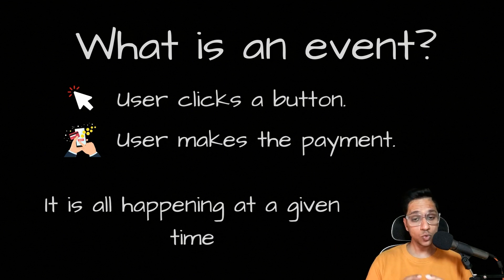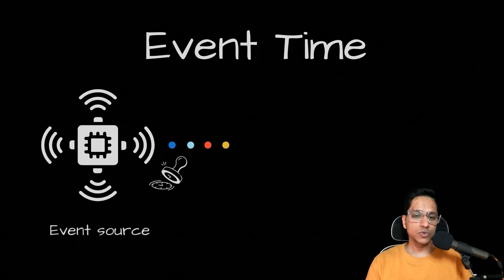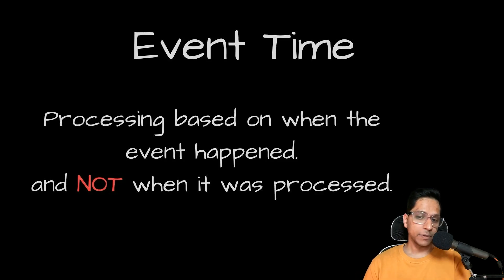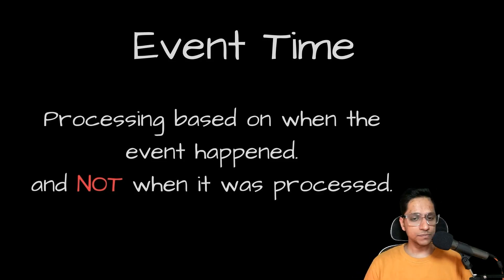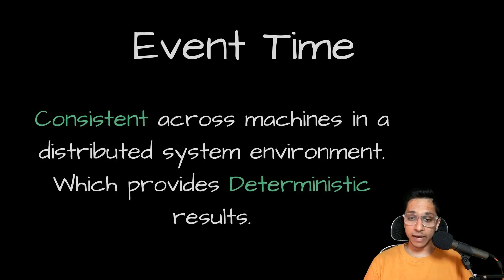Let's differentiate between two notions of time: event time and processing time. There is also ingestion time, but we'll skip that in this video. Event time refers to the time recorded at the source where the event is produced — it signifies the time when the event actually occurred. Processing is based on when the event happened, not when it was processed, meaning an event can occur now but be processed at a later time. Event time offers consistency across machines, as it is embedded within the event itself, ensuring deterministic results regardless of the processing machine.